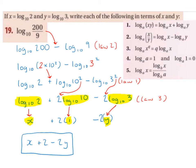If x equals log base 10 of 2 and y equals log base 10 of 3, write each of the following in terms of x and y. We have log base 10 of 200 divided by 9. We notice that this is a division, so we're going to use Law 2 of logs to break this up. Law 2 says: log base a of (x divided by y) equals log base a of x minus log base a of y.